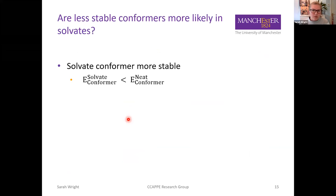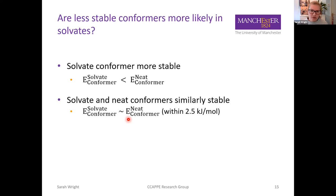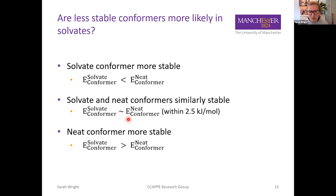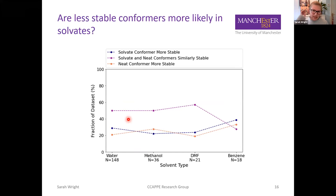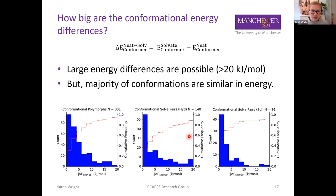Are less stable conformers more likely in solvates? If a solvate conformer is more stable, it is lower in energy than the neat conformer. Conformers are considered similarly stable if they are within 2.5 kJ/mol of each other. We find that the majority of the time conformers are similarly stable, and when either the solvate or neat conformer is more stable, there doesn't seem to be any preference for which structure contains the most stable conformer. Large energy differences of more than 20 kJ/mol are possible, but the majority of conformational energy differences fall within 0–5 kJ/mol.